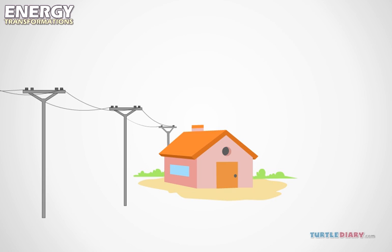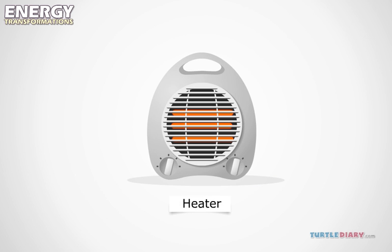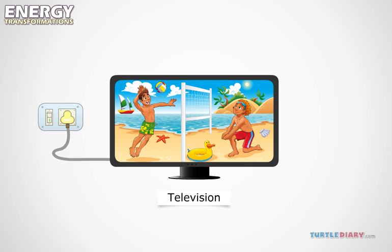Then electricity comes into our homes through wires and changes again. In a heater, it turns into heat energy. In a television, it turns into light and sound energy.